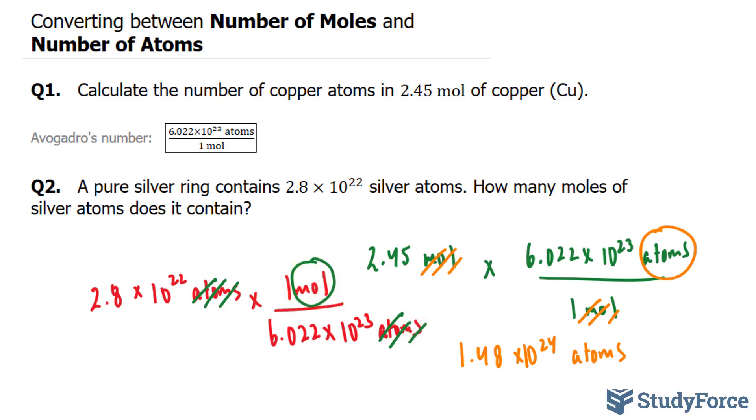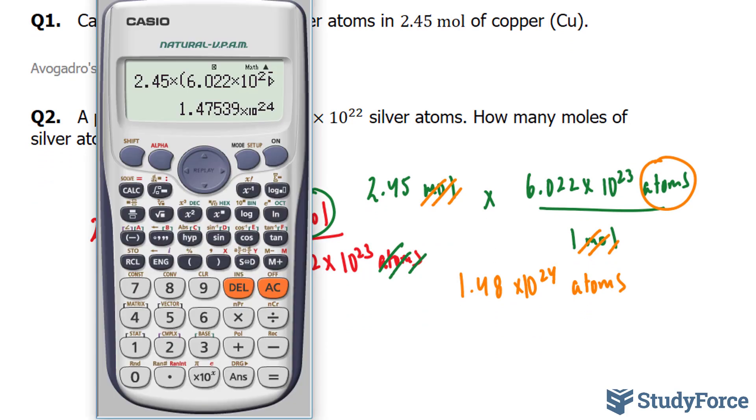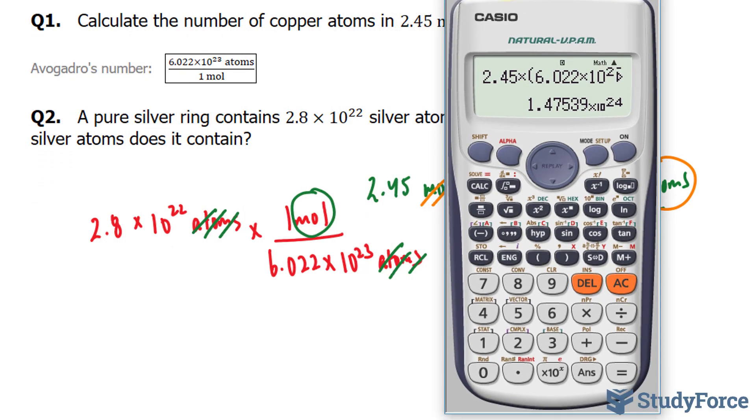Our final answer should have two significant figures. Let's use our calculator once again. 2.8 times 10 to the power of 22. Now, I realize a lot of you probably use a little triangle that enables you to convert from one thing to another. By using this method, you don't need to memorize any silly triangles. Just remember Avogadro's number and that it is a ratio that can be flipped.